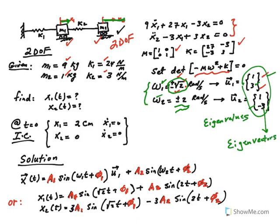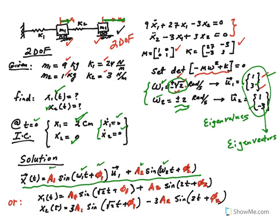Now, given some initial conditions at t = 0 — for example, mass 1 is moved 2 centimeters, mass 2 remains stationary, and both initial velocities are zero — we want to find the positions x1(t) and x2(t). It turns out the solution is a combination of sine waves at the two frequencies ω1 and ω2. We have constants a1, φ1, a2, and φ2 (shown in red) to determine — the amplitudes and phase angles. This is actually a vector equation multiplied by the respective mode shapes.